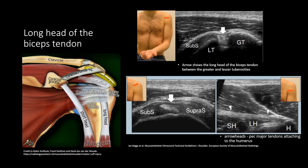The long head of the biceps tendon comes from the supraglenoid tubercle. It has both an intra- and extra-articular portion. As it passes through the rotator interval, it goes into the bicipital groove at the proximal humerus. The first step of evaluation is to rotate the arm so the hand is pointing to the contralateral side to expose the groove. The images show the normal echogenic biceps tendon between the greater and lesser tuberosities. As you move the transducer up, you can see the intra-articular portion within the rotator interval between the supraspinatus and subscapularis muscles. If you go down, you'll see the myotendinous junction where the tendon transitions into the muscle.